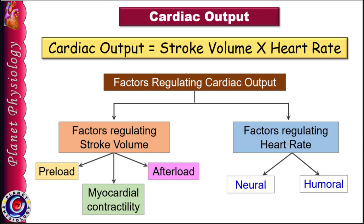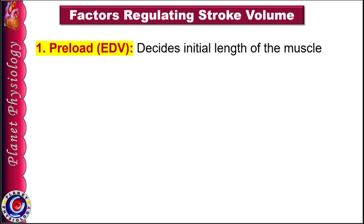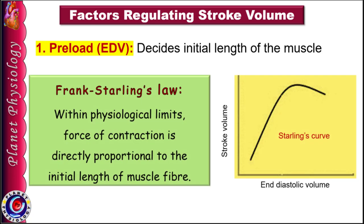The first factor affecting stroke volume is preload. Preload is the load acting on the muscle before contraction begins. In case of ventricles, preload is end-diastolic volume — the volume of blood present in the ventricles at the end of diastole. This decides the initial length of the ventricular muscles, and according to Frank-Starling's law, within physiological limits, force of contraction is directly proportional to the initial length of the muscle fibre, as represented by the Starling's curve.